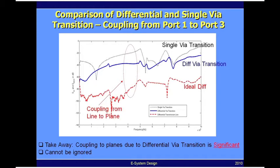The third curve, the blue curve, corresponds to the differential via to via transition. As you can see, the level of coupling between the differential line and the power and ground planes is quite significant, around minus 30 dB, which means these differential lines are no longer ideal. This coupling causes a reduction in the energy that can propagate from the input end to the far end.